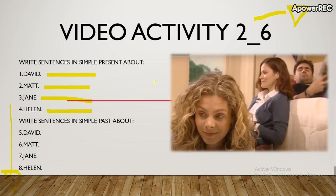Tienen una oración. Pueden utilizar am, is, are, o pueden usar verbos. Por ejemplo, Jane is reading or is watching TV. Could be simple present or present continuous, depends on you. Or Helen works every day, according to the video. Tienen que ser reales de acuerdo al video. O si puede decir ella, I don't like pasta, entonces dice Helen doesn't like pasta. So simple present.